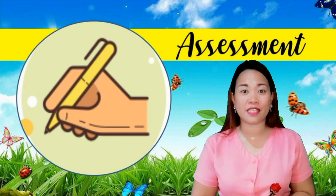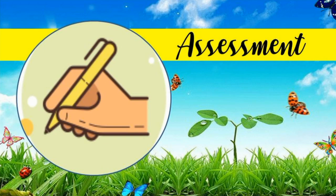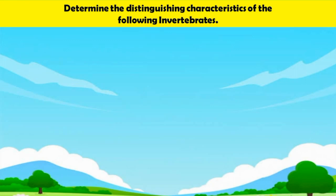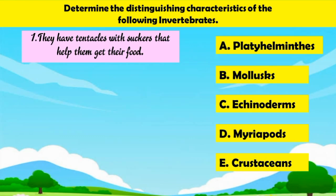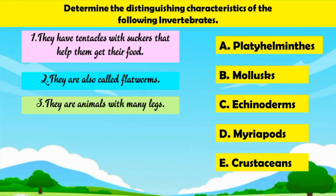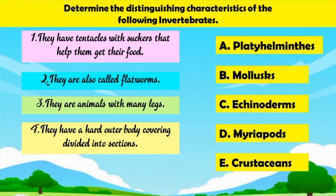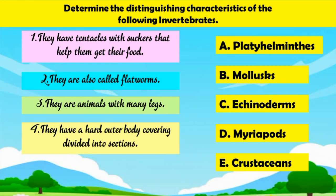In order to evaluate your level of mastery of our lesson, kindly answer the assessment. Determine the distinguishing characteristics of the following invertebrates. A. Platyhelminths. B. Mollusks. C. Echinoderms. D. Myriapods. E. Crustaceans. 1. They have tentacles with suckers that help them get their food. 2. They are also called flatworms. 3. They are animals with many legs. 4. They have a hard outer body covering divided into sections. 5. They are soft-bodied animals.